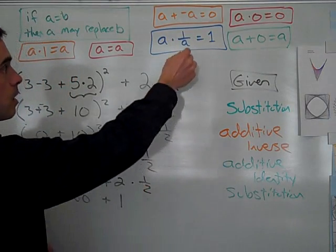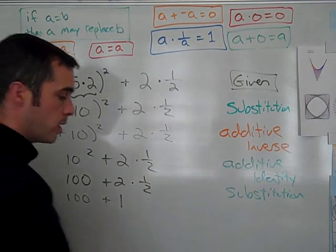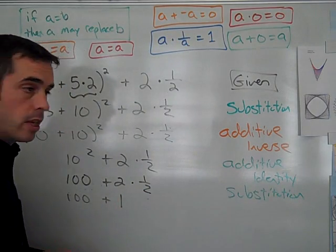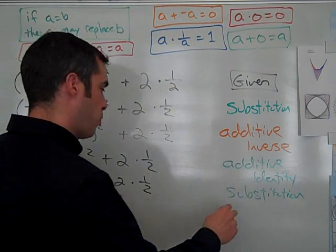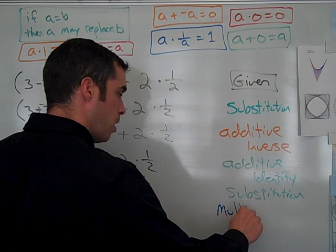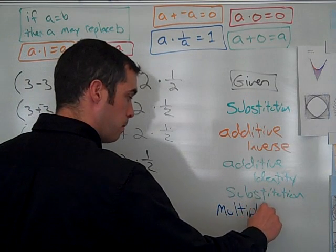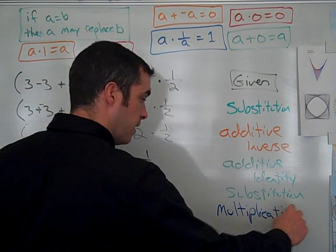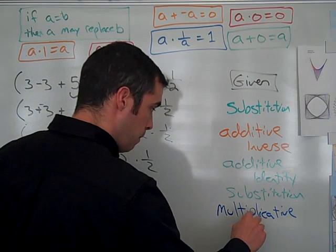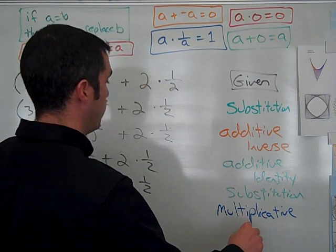Sometimes we call this a multiplicative inverse, or sometimes we call it a reciprocal. The proper name is the multiplicative inverse property. Multiplicative, it's kind of fun to say. Multiplicative property.